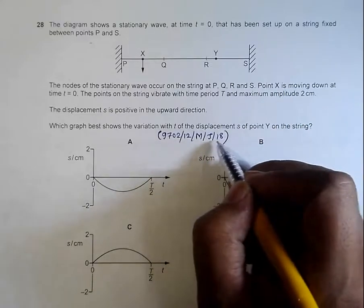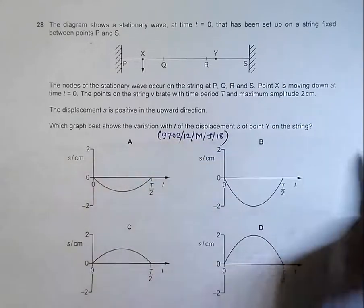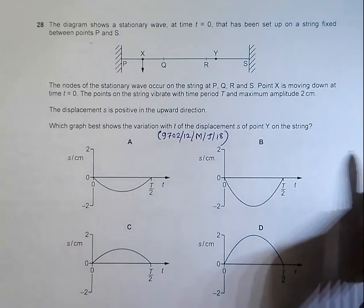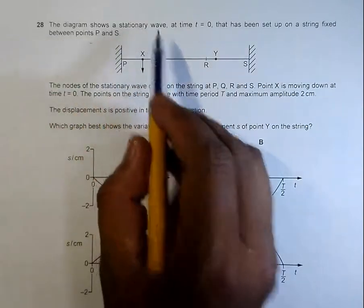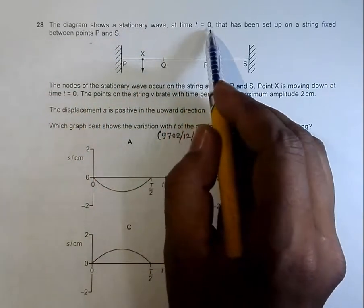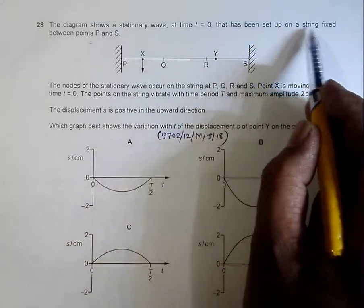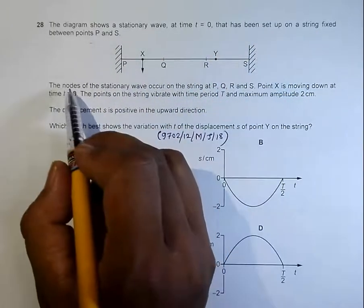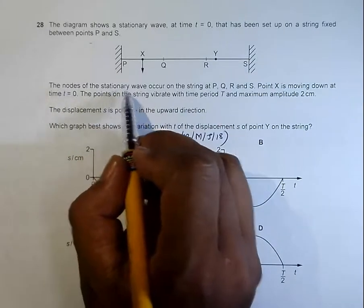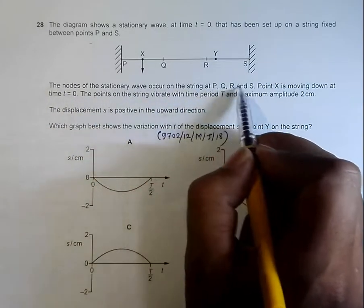The question is from the 2008 May June Paper 1-2, question number 28, and it is concerned with stationary waves. The diagram shows a stationary wave at time t equal to 0, which has been set up on a string fixed between points P and S. These are the fixed points. The nodes of the stationary wave occur on the string at P, Q, R, and S.